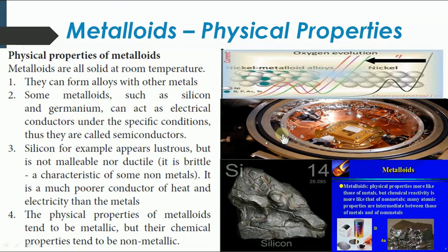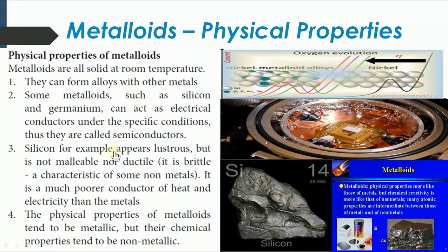Silicon and germanium are used in most integrated circuits and even TV remotes — any circuit is made up of silicon. Silicon appears lustrous but it is not malleable or ductile. Malleable means it can be beaten into sheets; ductile means it can be drawn into wires. Silicon cannot do either — it is brittle and breaks easily. It is also a much poorer conductor of heat and electricity than metals. However, by adding impurities under certain conditions, we can make it a good conductor — that's what we call a semiconductor.